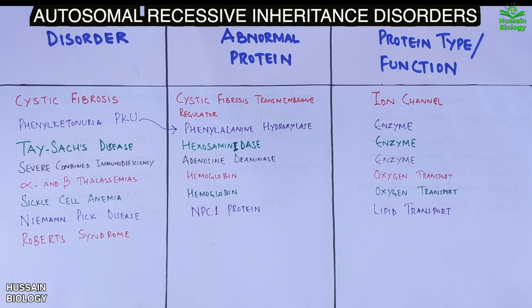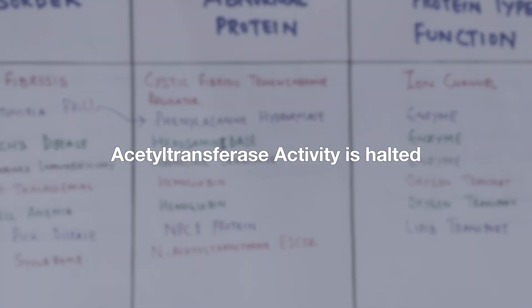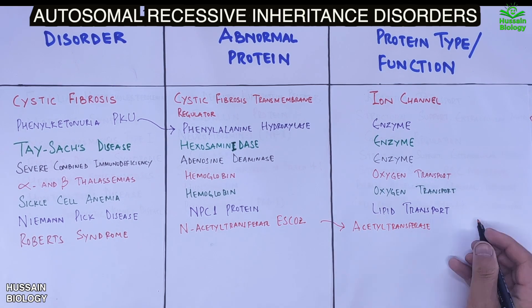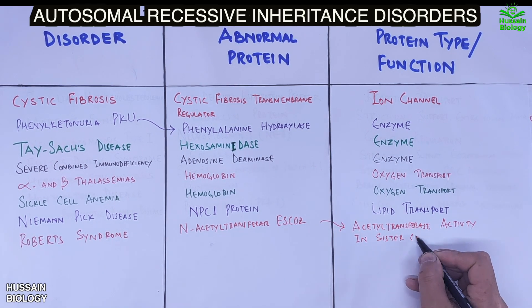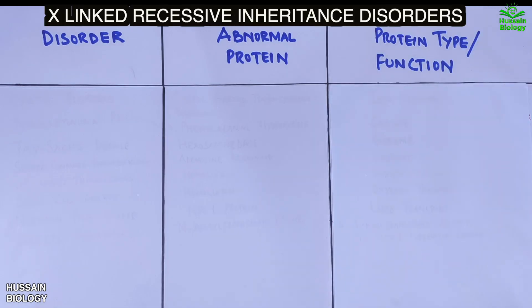The last important autosomal recessive disorder is Roberts syndrome, characterized by prenatal retardation or disruption of cell division leading to malformation of bones in the skull, face, arms, and legs. The abnormal protein involved is acetyltransferase ESCO2, which under normal conditions shows acetyltransferase activity in sister chromatid cohesion.